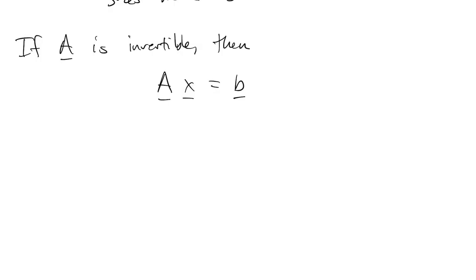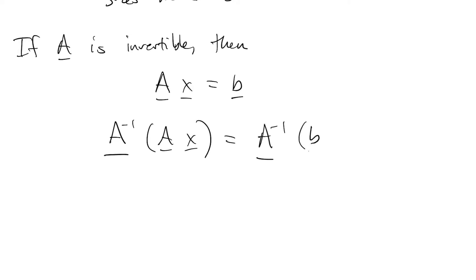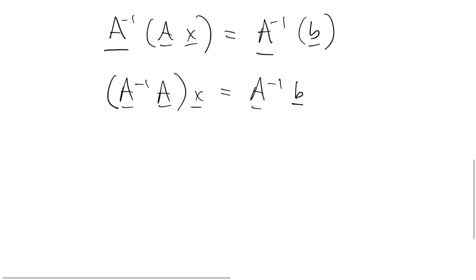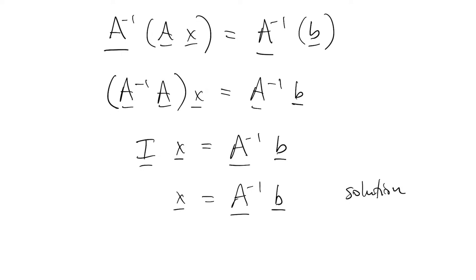If A is invertible, if A has an inverse, then we can use it to solve the system of equations. We multiply on the left, on both sides, by A inverse. We use that associative property of multiplication, and then we use the fact that A inverse A is the identity, and the identity times anything is the thing. There's our solution x to the system.